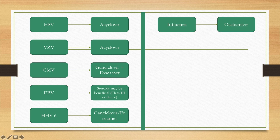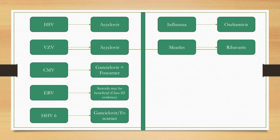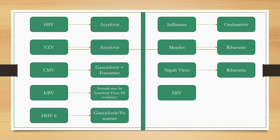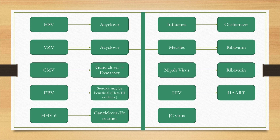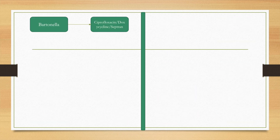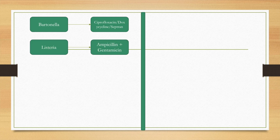For influenza, oseltamivir is the drug of choice. For measles and Nipah virus, ribavirin is used. For HIV, highly active antiretroviral therapy is used. For JC virus, reversal of immunosuppression is planned. For Bartonella, ciprofloxacin, doxycycline, and septran may be used. Listeria can be treated with ampicillin and gentamicin. Mycoplasma can be treated with azithromycin, doxycycline, and fluoroquinolones.